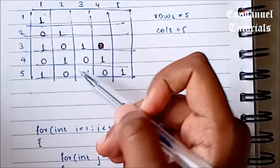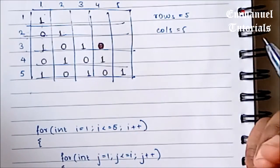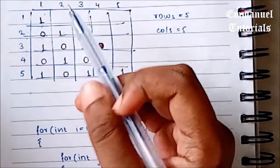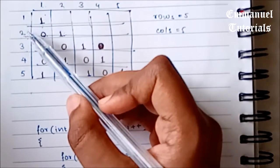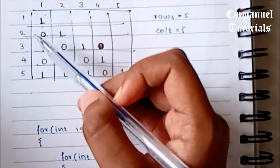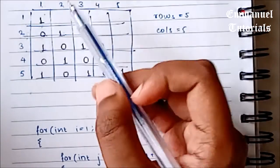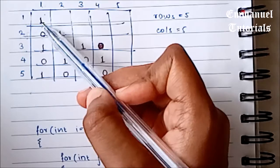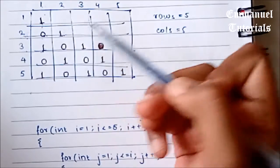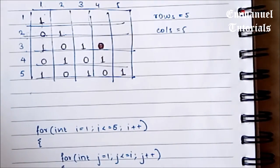So if you check for each subsequent number, we'll understand that whenever we try to find the modulus of the sum of the row number and column number divided by 2, if at all the remainder is 0, we print 1 and if the remainder is 1, we print 0. This is the relationship and this is how the next number is being determined.